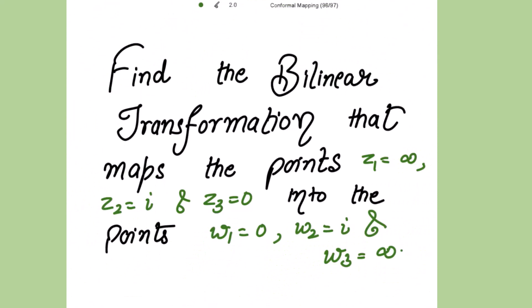We are going to find the bilinear transformation that maps the point z1 equal to infinity, z2 equal to iota and z3 equal to 0 into the points w1 equal to 0, w2 equal to iota and w3 equal to infinity.